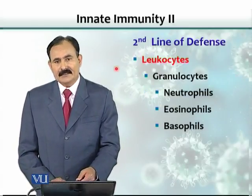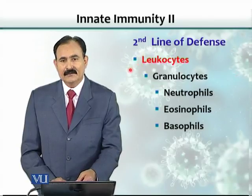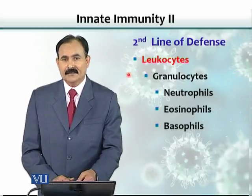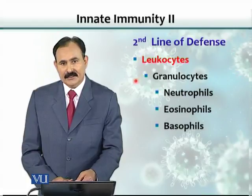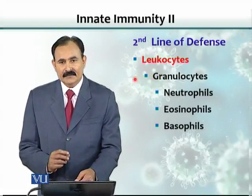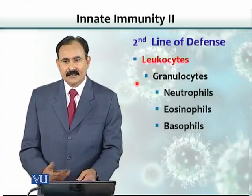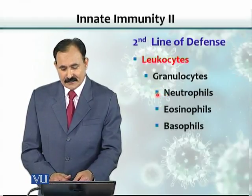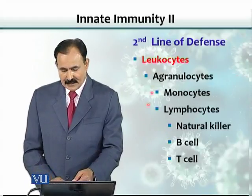The second line of defense includes cells — white blood cells called leukocytes. There are various types of leukocytes. One major type is granulocytes and the other is agranulocytes. Granulocytes have small granules containing chemicals to kill organisms. Examples include neutrophils, eosinophils, and basophils.